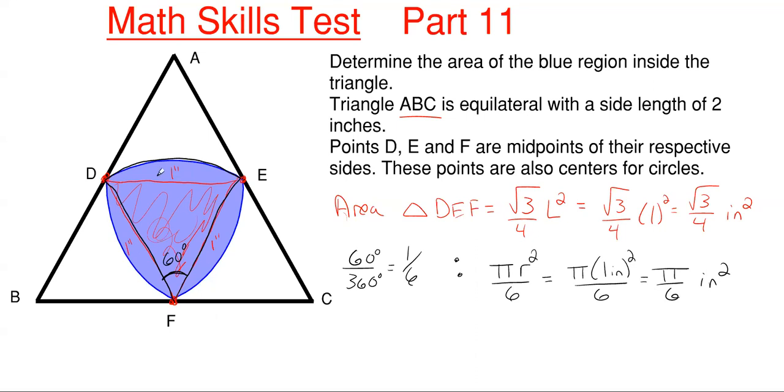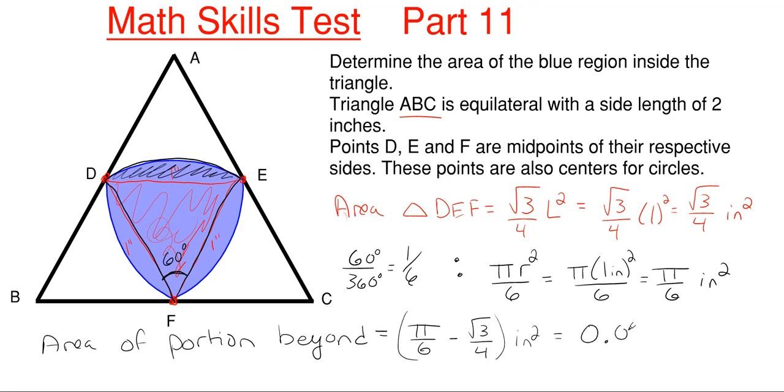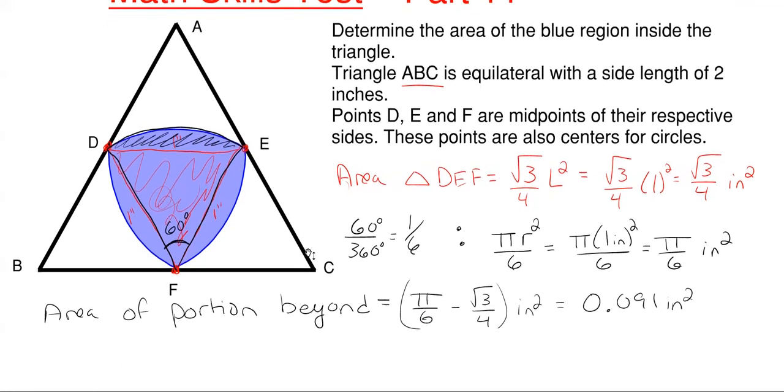Well, how much is it beyond? So I'm looking for this portion right here, then I can add that to my equilateral triangle. Well, that is just going to be my circle portion of pi over 6 subtracting off the equilateral triangle area of square root of 3 over 4. So the area of the portion beyond is just going to be my pi over 6 subtracting off the square root of 3 over 4, which gives me an extremely small number, which you can leave it as this if you want to. You can just say that's what it is in inches squared, or you can write it in decimal form of 0.091 inches squared. I'm just going to leave it as this right now. But as you can see, that's a very, very small portion.